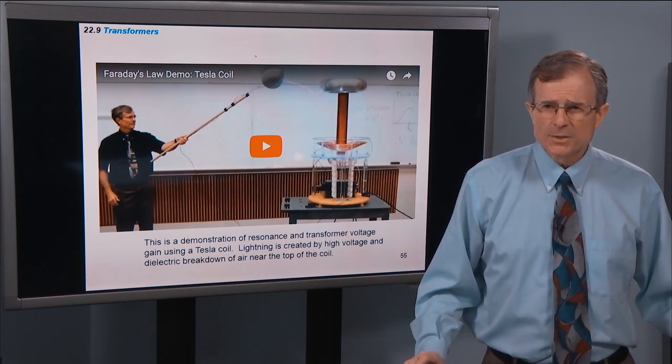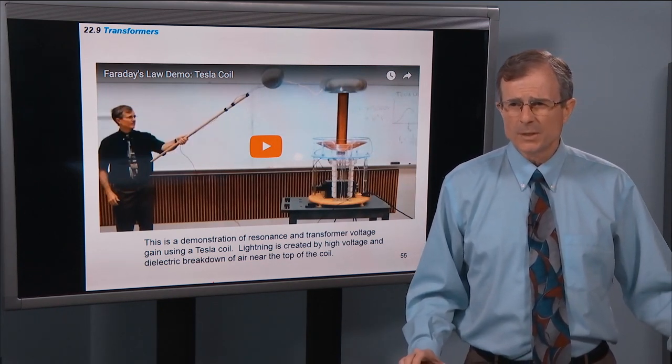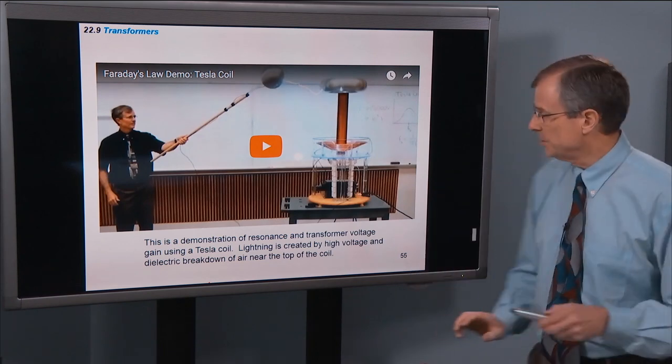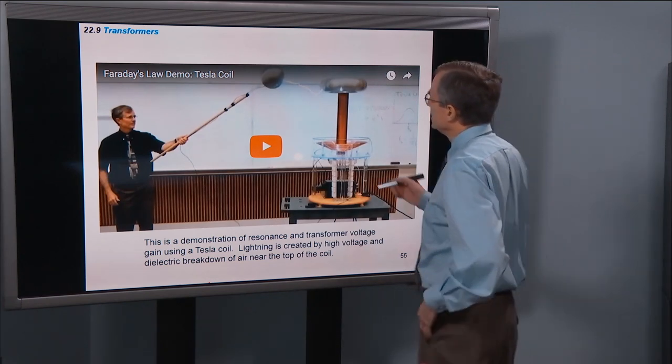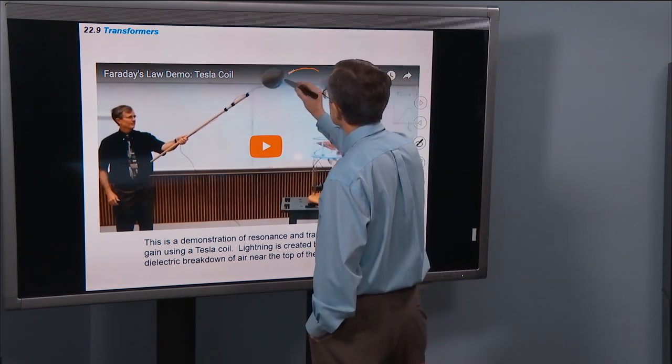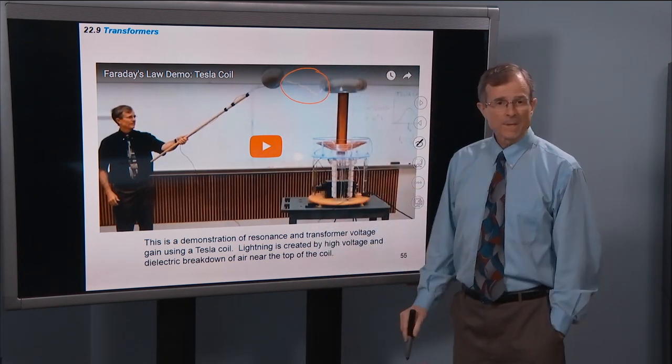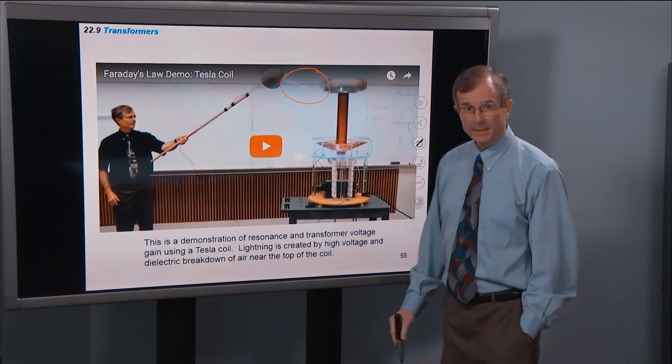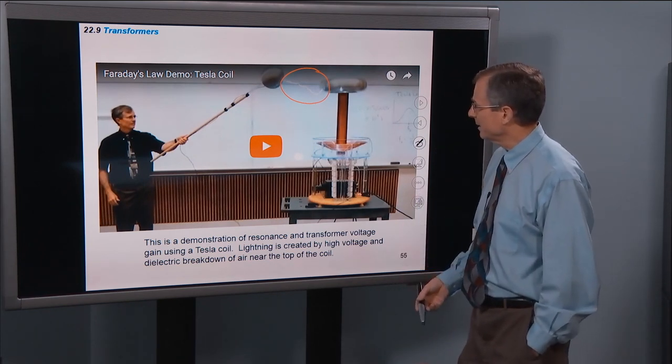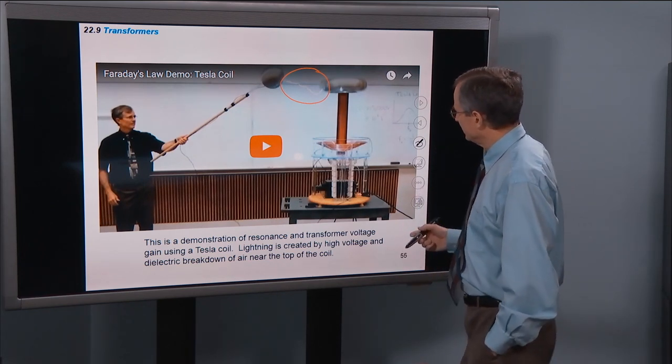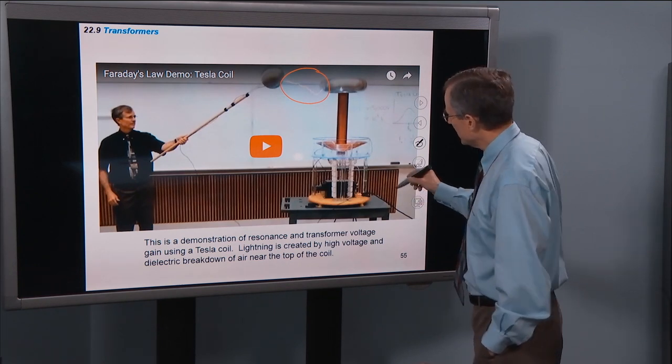So this is a demonstration of resonance and transformer voltage gain using a Tesla coil. So we're going to create some pretty good size, about 1 m long lightning bolts, basically. We're going to cause a dielectric breakdown of the air. And this is done using a Tesla coil.